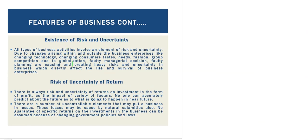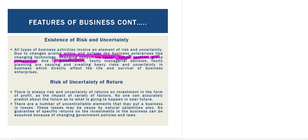The next feature is existence of risk and uncertainties. As studied in the previous video, there is uncertainty in the market, and due to this uncertainty it becomes very risky. Uncertainty can be seen in the form of changing customer taste, changing customer nature, changes in fashion, growing competition due to globalization, and faulty managerial decisions or faulty planning — all creating heavy risk and uncertainty in business.